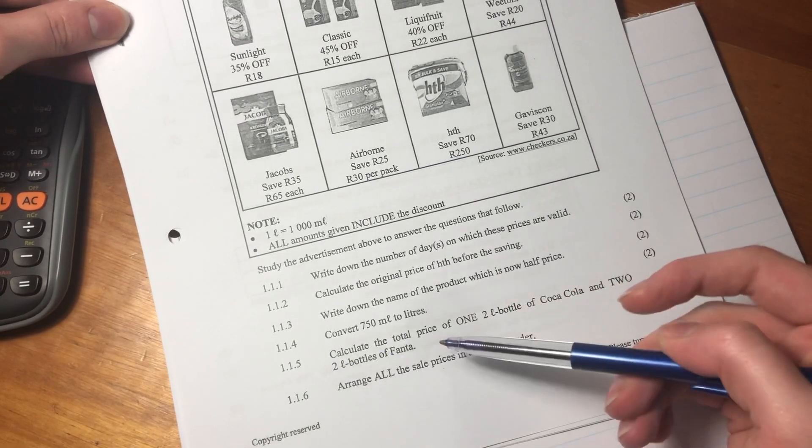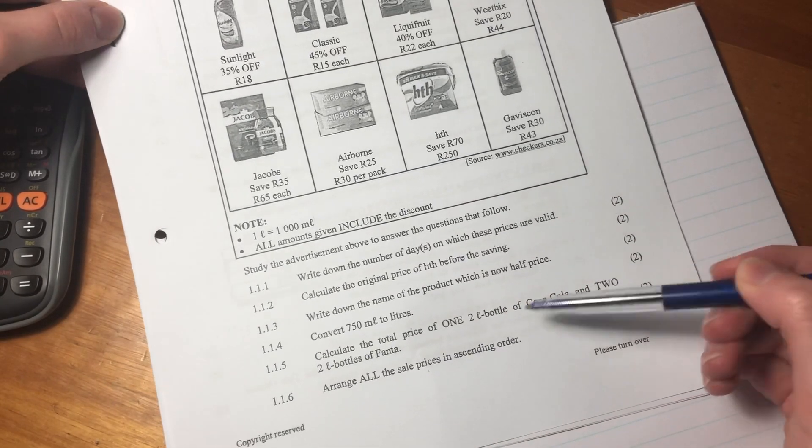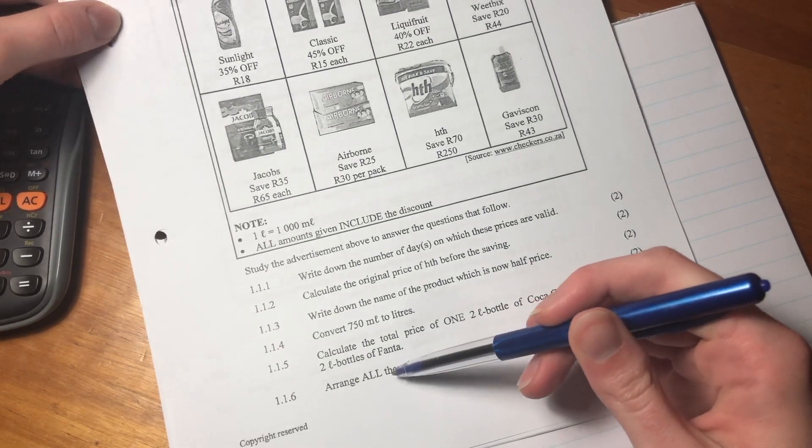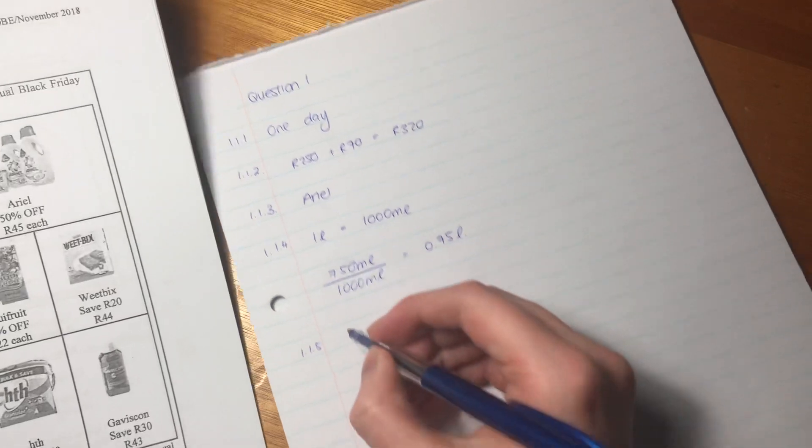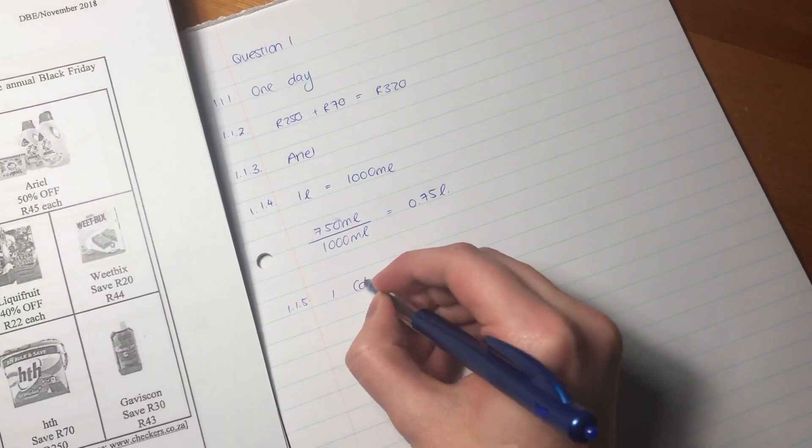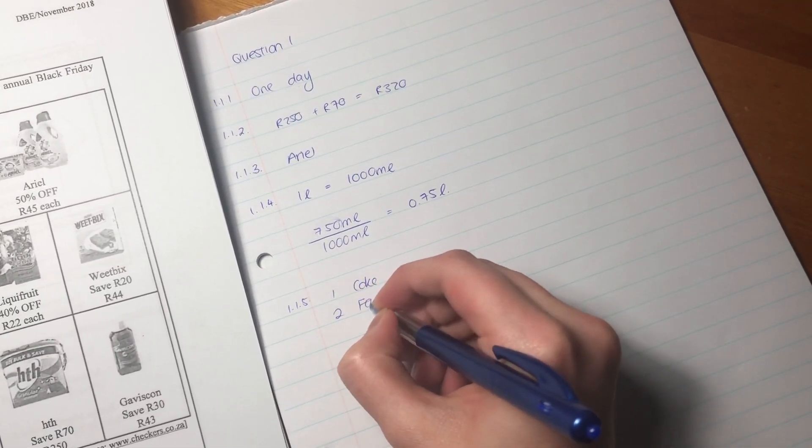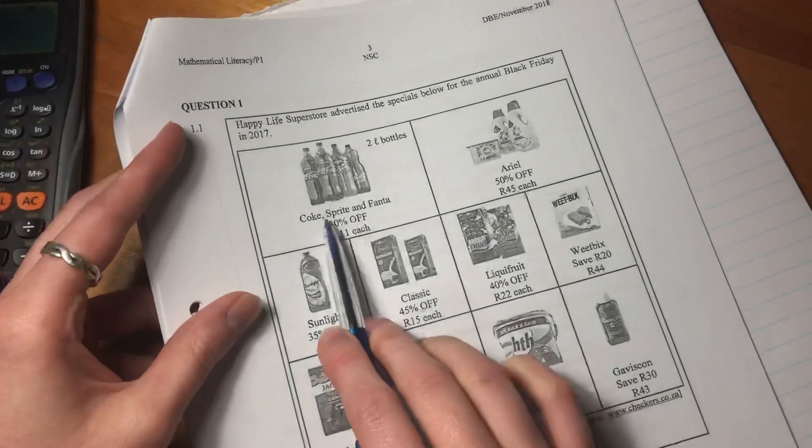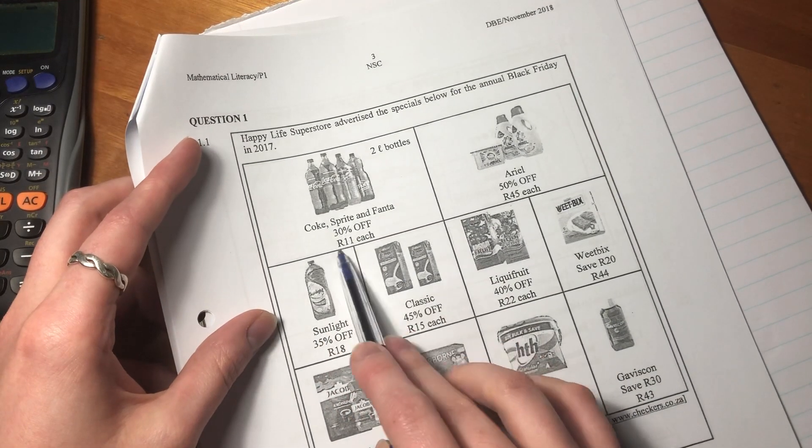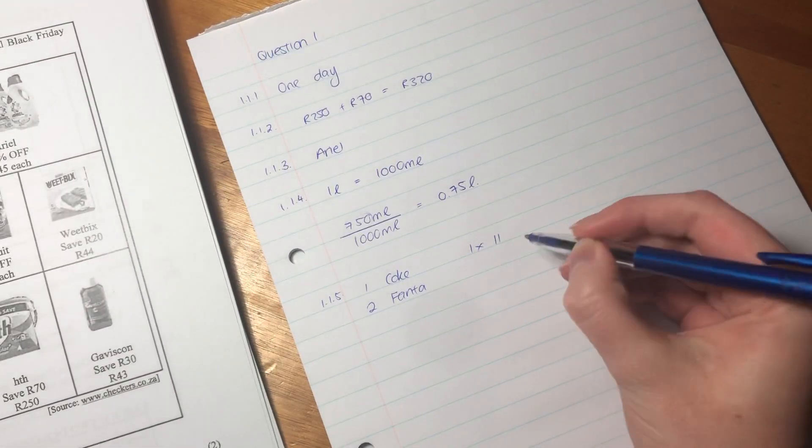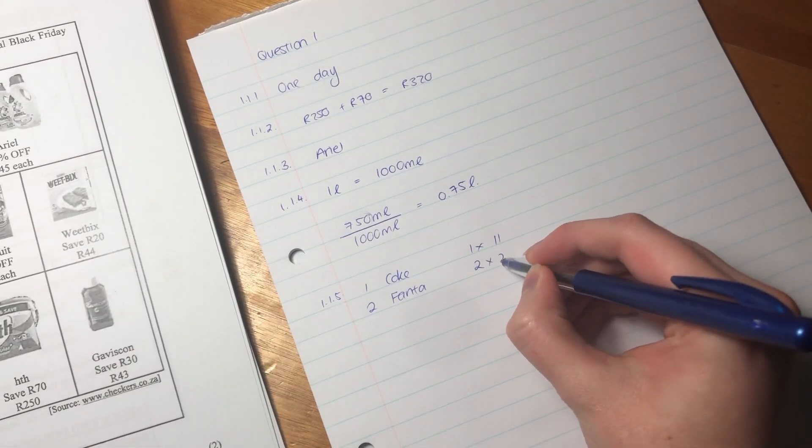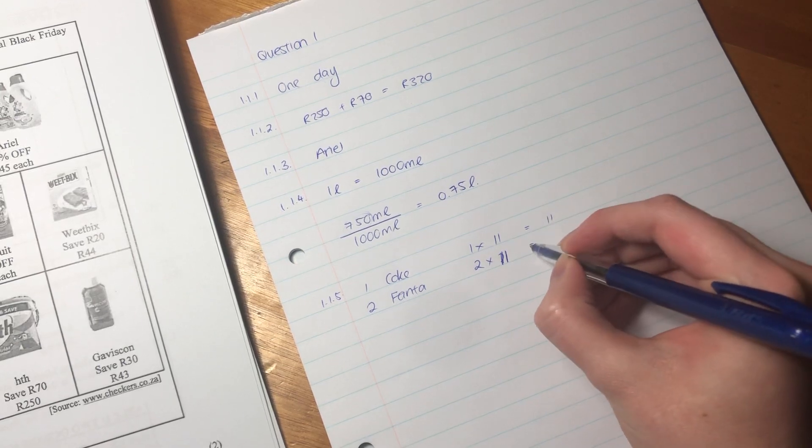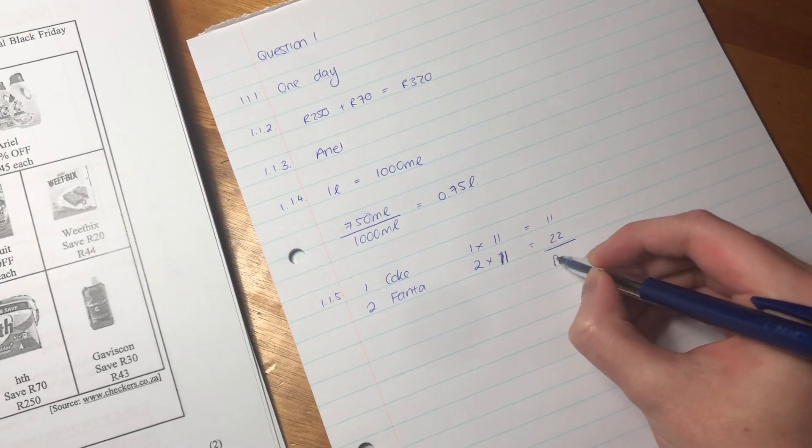Calculate the total price of one two-liter bottle of Coca-Cola and two two-liter bottles of Fanta. So there's two Fantas. I'm just going to write that down: one Coke and two Fantas. The Fantas and the Cokes are both 11 rand. So the Coke is going to be 1 times 11 and the Fanta is going to be 2 times 11.